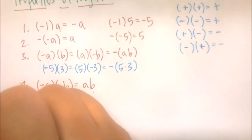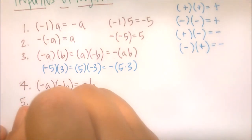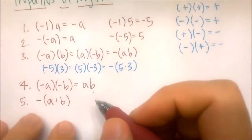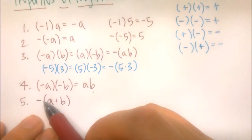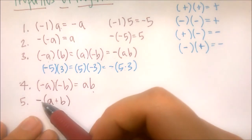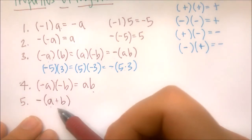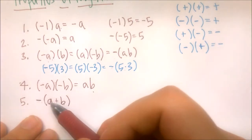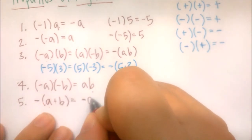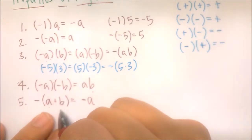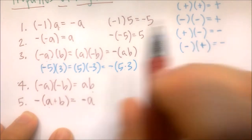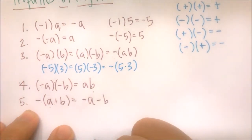The fifth property involves addition. If we have the negative of a plus b, we look at the negative like a negative 1 and distribute it using the distributive property. The negative 1 multiplies both a and b: negative 1 times a is negative a, and negative 1 times positive b is negative b. So the negative of a plus b equals negative a minus b.